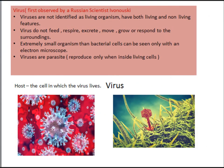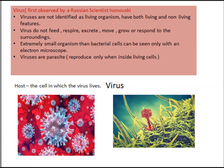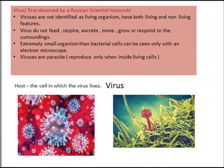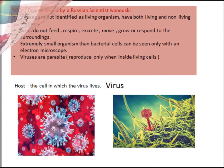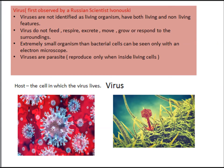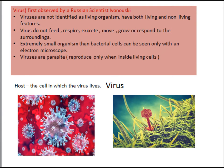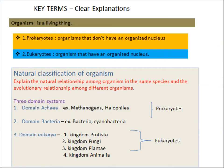Before moving to Eukarya, let's see about viruses. Viruses were first observed by the Russian scientist Ivanovsky. Viruses are not identified as living organisms because they have both living and non-living features. Viruses are extremely small — smaller than bacteria cells — and can be seen only with an electron microscope. Reproducing is the only living feature of viruses, but they can reproduce only inside living cells, so they are named as parasites. The cell in which the virus lives is called the host.